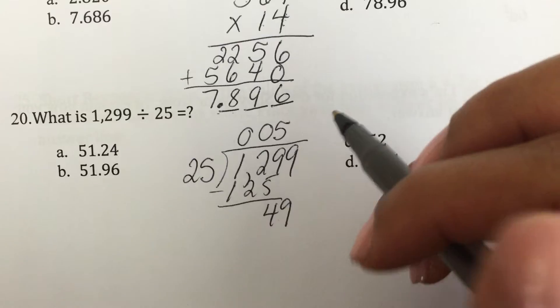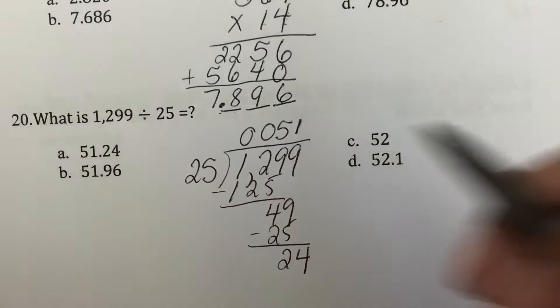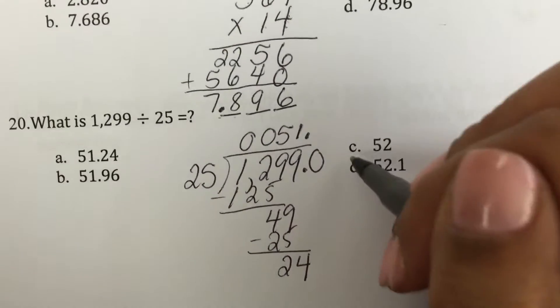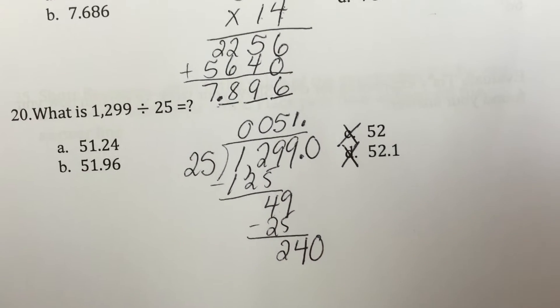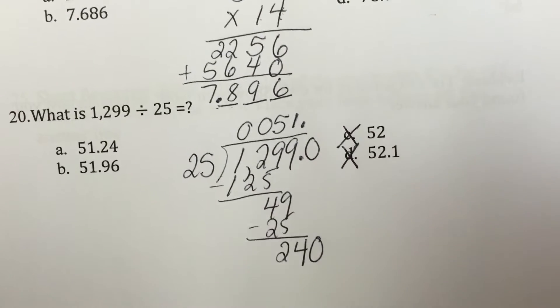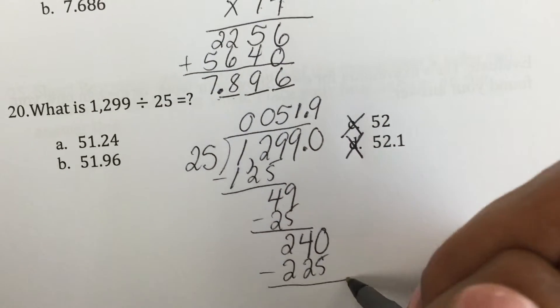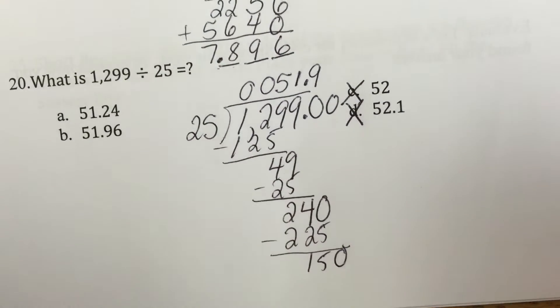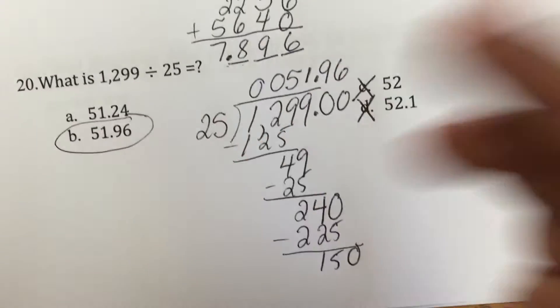49. 25 can go into 49 one time. And I get 24. So I'm going to have to put the decimal. At least I know these two are not the answer. It can go into 240. Let's see. 4 quarters and 100. 8 quarters and 200. Plus 1. So I'll make it 9 more. So that's 225. I like to use a lot of common sense when doing these. And 25 goes into 150 six times.